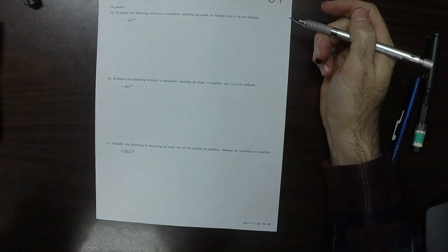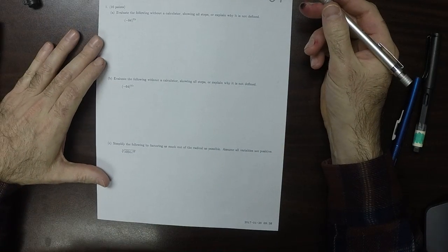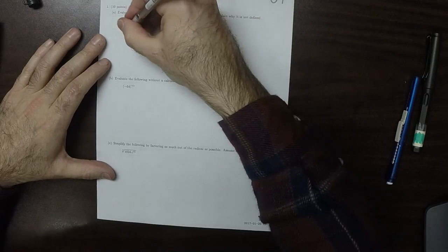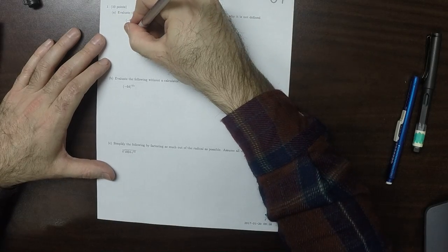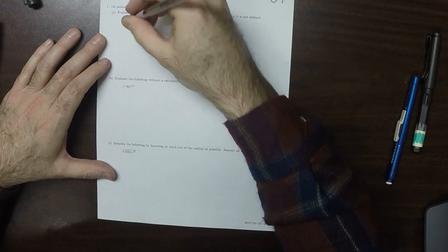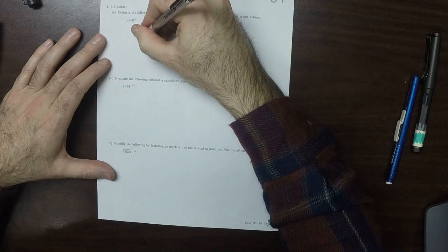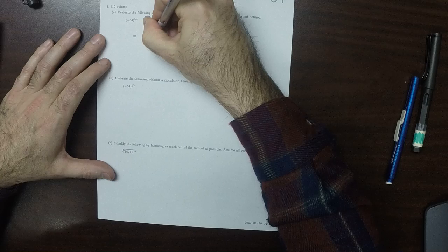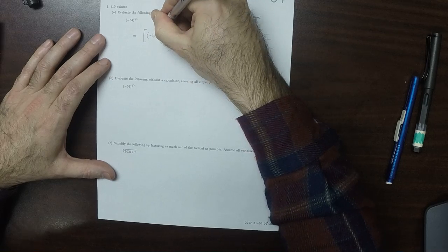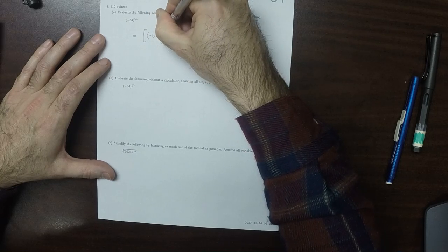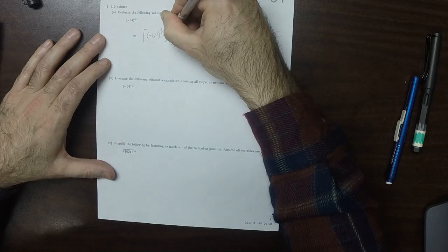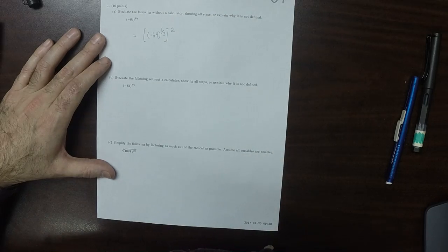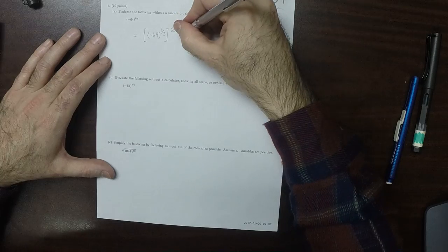This is the solution to written homework 7. According to the definition, this is negative 64 to the 1/3 squared. That's the definition of that statement.